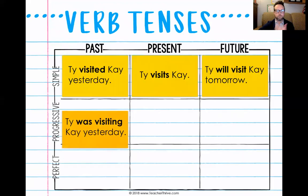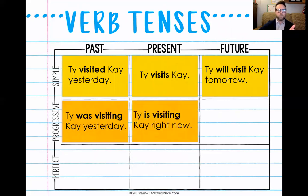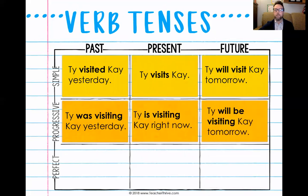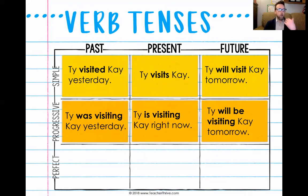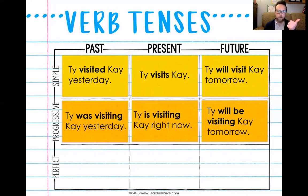So: 'Ty was visiting Kay yesterday' — past progressive. 'Ty is visiting Kay right now' — present progressive. 'Ty will be visiting Kay tomorrow' — future progressive. So far we have our chart two-thirds of the way filled out. Go back into the video and write down past progressive, present progressive, and future progressive — when it is happening. Next time, we are going to be looking at past, present, and future perfect tense. Thank you.